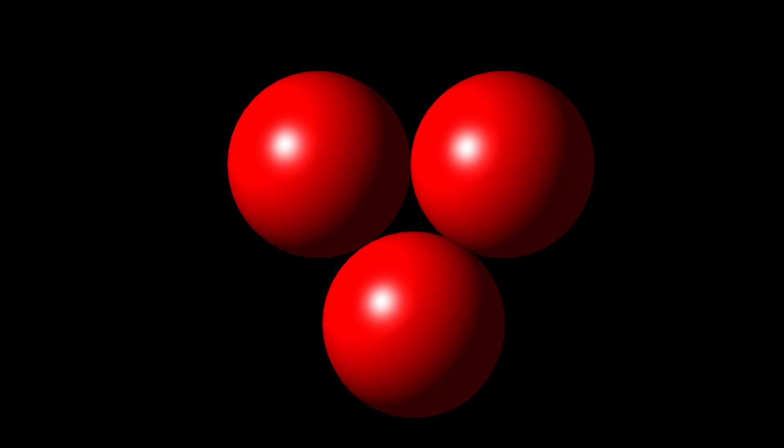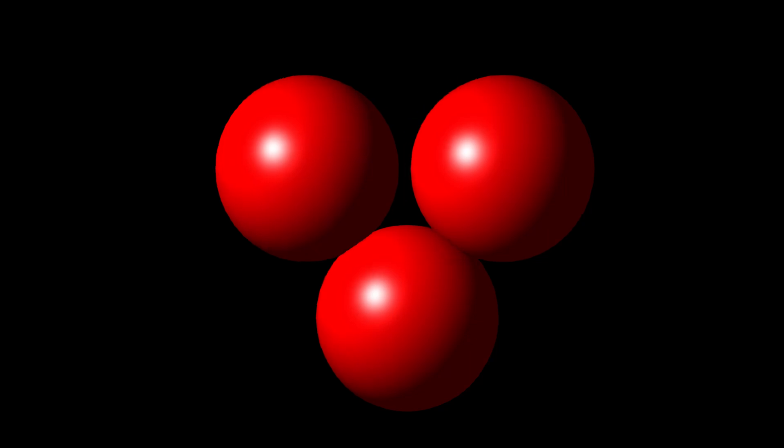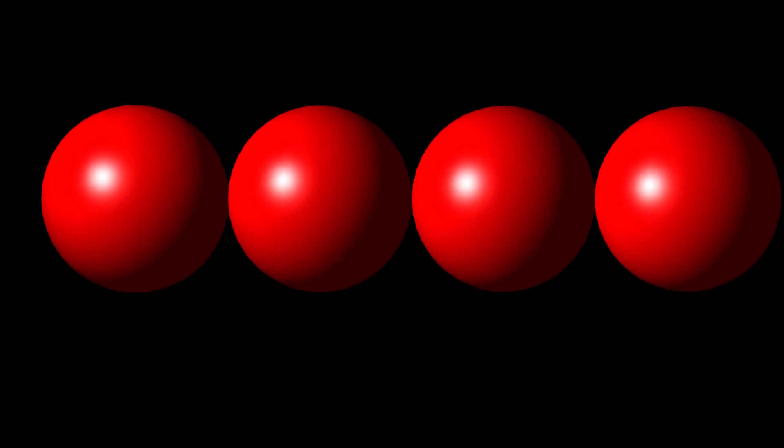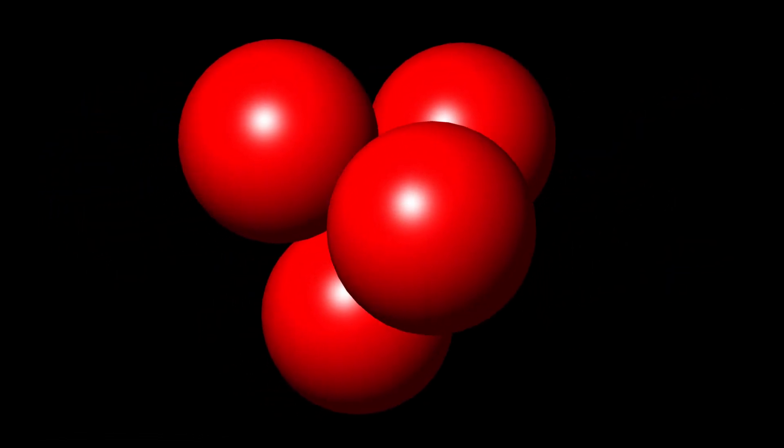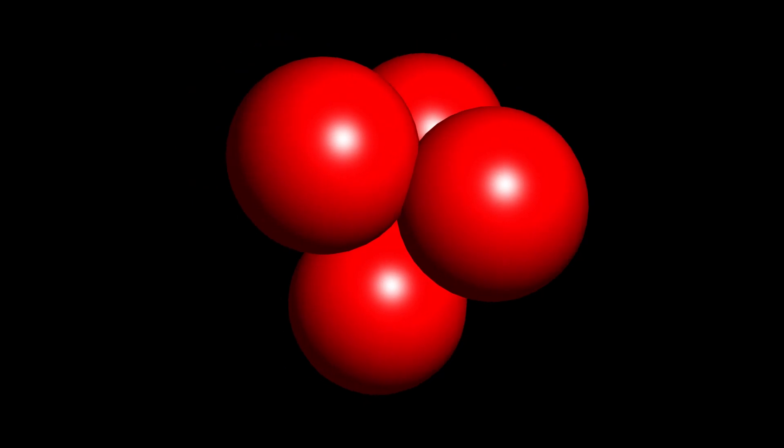When we consider four spheres there are three possibilities: all four in a line, in the shape of a square and in the shape of a tetrahedron. The latter is the most stable structure and is the simplest of the platonic solids.